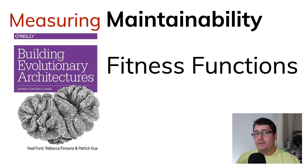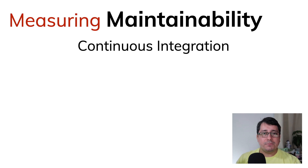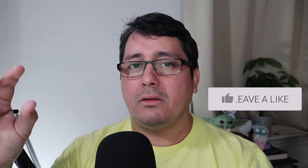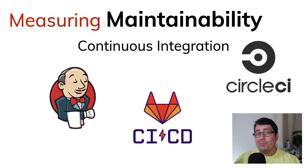For this specific video we're going to be using three things, and those three things are going to be based on continuous integration. Continuous integration means every time we push a piece of code into a remote repository — whether you're using Git, SVN, Bitbucket, or whatever — a process runs that does something with our code, for example using Jenkins CI, CircleCI, or my favorite, GitLab CI.